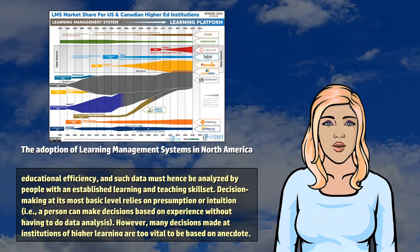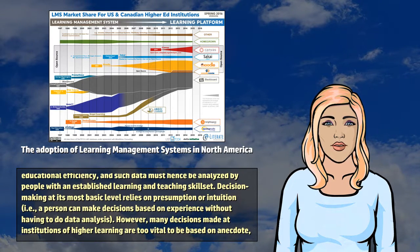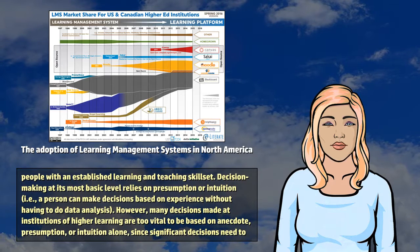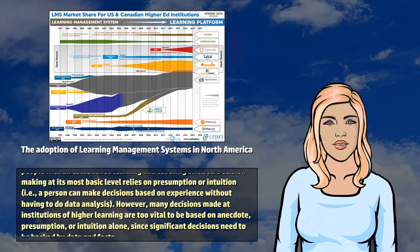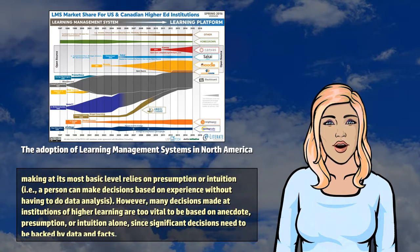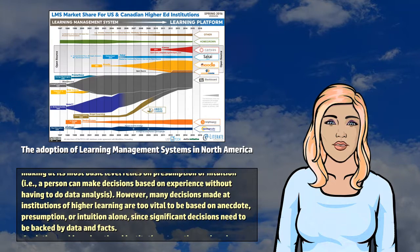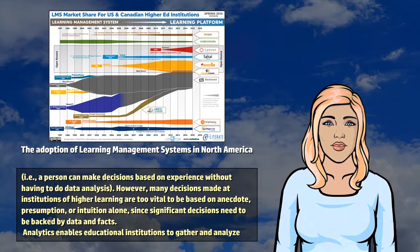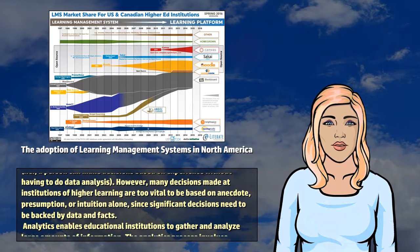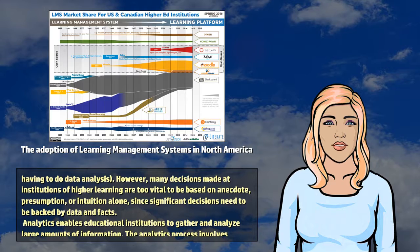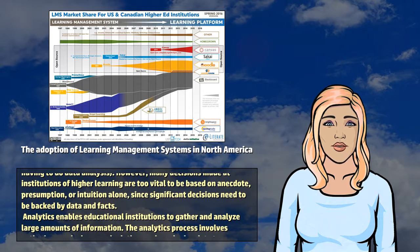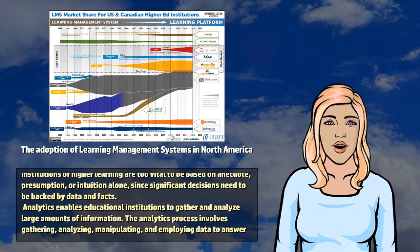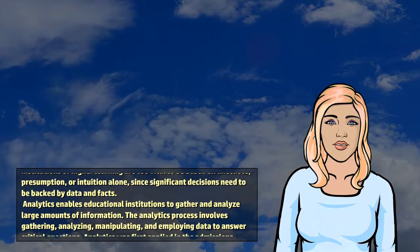Decision-making at its most basic level relies on presumption or intuition, i.e., a person can make decisions based on experience without having to do data analysis. However, many decisions made at institutions of higher learning are too vital to be based on anecdote, presumption, or intuition alone, since significant decisions need to be backed by data and facts.